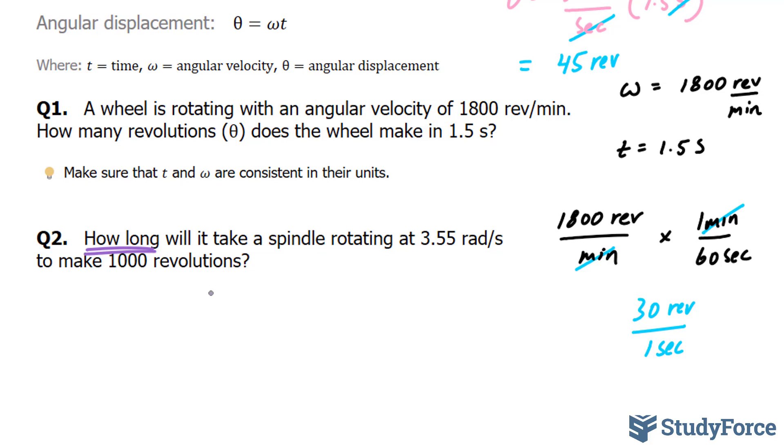That being said, the first thing that I'll do is solve for t and I can do that by dividing both sides by angular velocity where theta over omega is equal to t. This number 1,000 revolutions actually represents the angular displacement. And because our angular velocity, 3.55 radians per second is in radians, we should convert 1,000 revolutions into radians. And that's really easy to do.